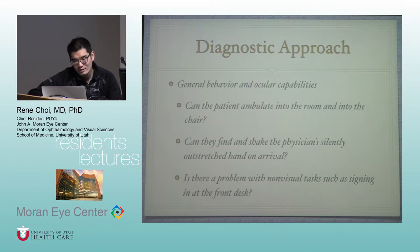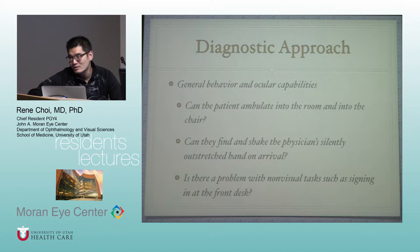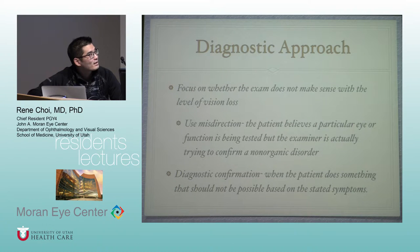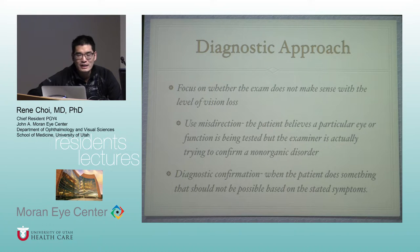Pay attention to general behavior and ocular capabilities. Can the patient ambulate into the room? If they say they can't see at all but they're able to do that, that's a visual task. Can they find and shake the physician's silently outstretched hand on arrival? Is there a problem with non-visual tasks like signing in at the front desk? Focus on whether the exam doesn't make sense with the level of vision loss. Use misdirection — pretend you're testing one eye while actually testing the bad eye. Diagnostic confirmation comes when the patient does something that should not be possible based on their stated symptoms.